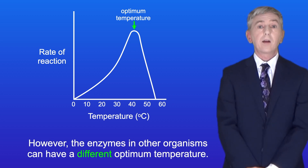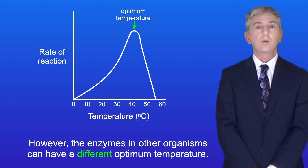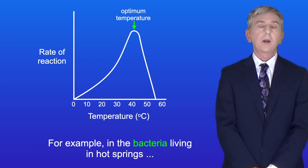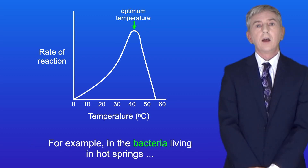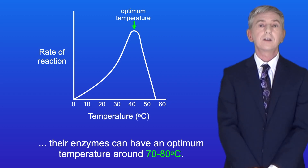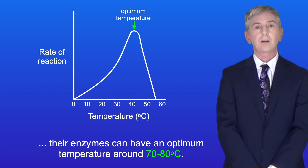However, the enzymes in other organisms can have a different optimum temperature. For example, in the bacteria living in hot springs, their enzymes can have an optimum temperature around 70 to 80 degrees Celsius.